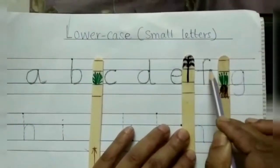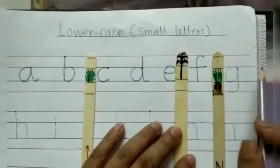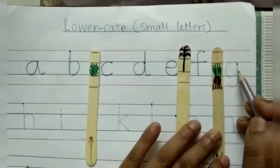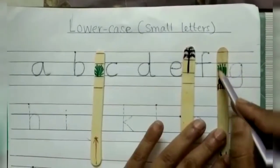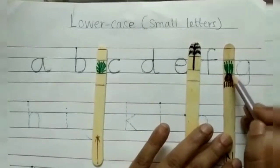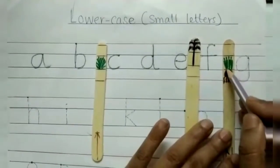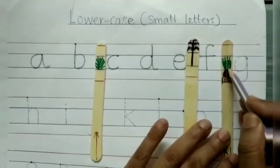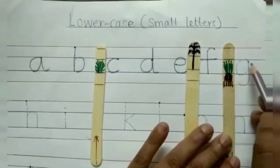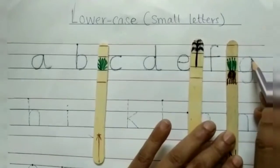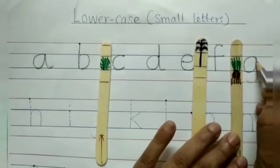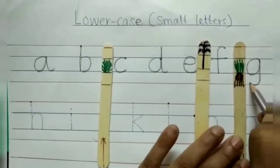G is a hanging letter — a fall letter. I have used the image of underground vegetables to help the child understand: the leaves are on top and the fruit grows underground. So this letter goes underground. Half circle, go up and hook.